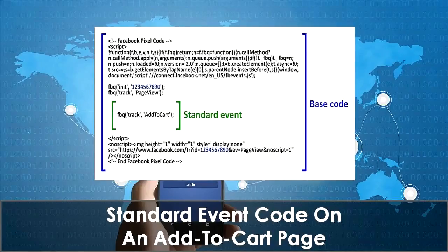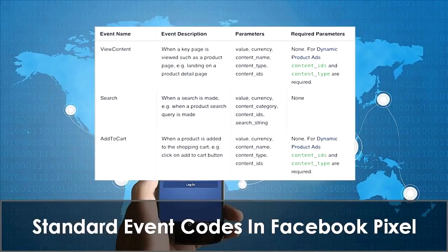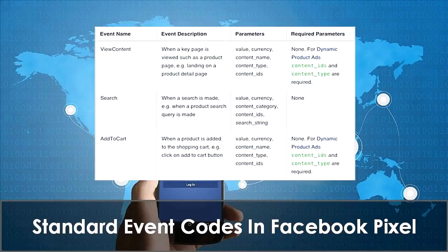If you want to track Add to Cart as an example, there are various standard event codes available in Facebook pixel for you to track, and each event code represents a specific action. Event codes allow you to see the total number of audience members that go through your funnel and the actions they take. You could determine if people are adding products to cart or even adding payment info — and what if people are viewing your content but not making a purchase. Through these codes, you can pinpoint which stage requires adjustment to get the action steps to flow from viewing products to making a purchase.